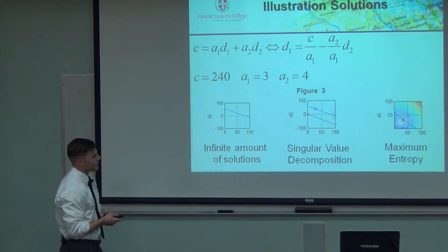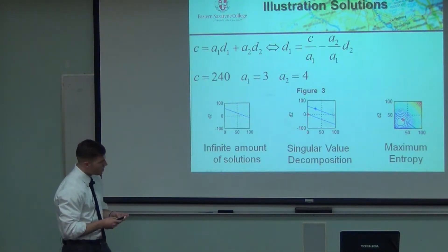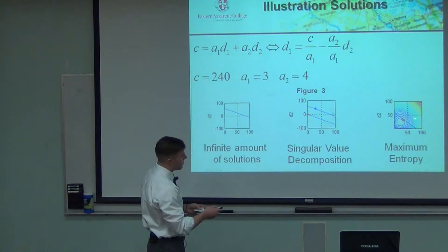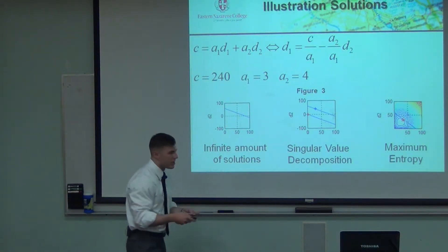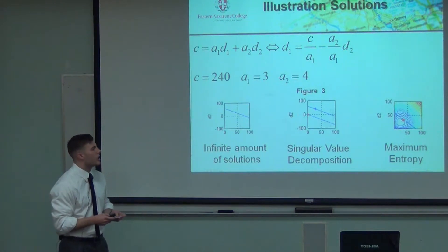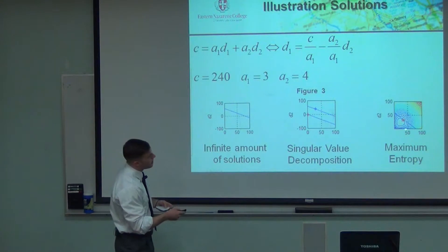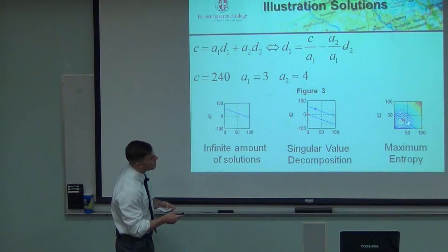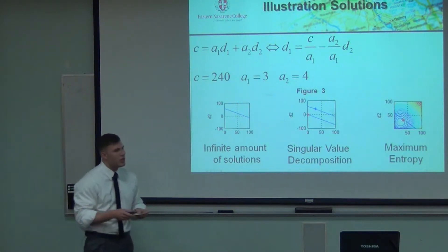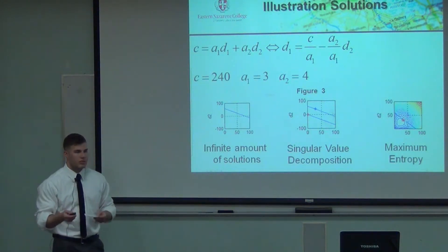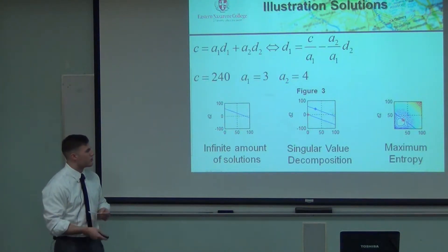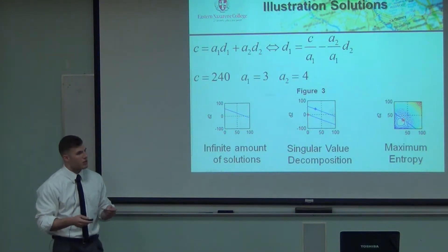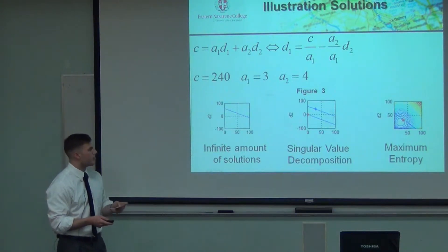Maximum entropy is our iterative method and is much more ideal. These circles coming out are made up of points, and each point has an equal probability of occurring. We want the point that lies tangent to the constraint line — when the curve intersects the line for the first time at just one point, that's what we want. If we get two intersection points, we've gone too far; if we haven't intersected the line, we haven't gone far enough. This is the iterative method we're going to use.